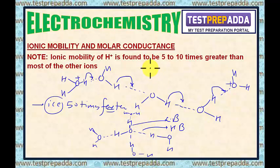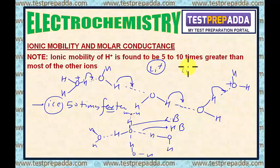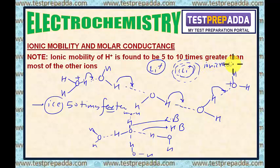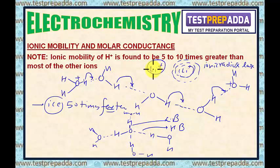Lithium ion (Li⁺) is also small in size and has high charge density. Hence it is heavily hydrated, surrounded by a large number of water molecules, so its effective ionic radius becomes very large in aqueous media and its ionic mobility decreases. This is why the ionic mobility of Li⁺ ion is low.